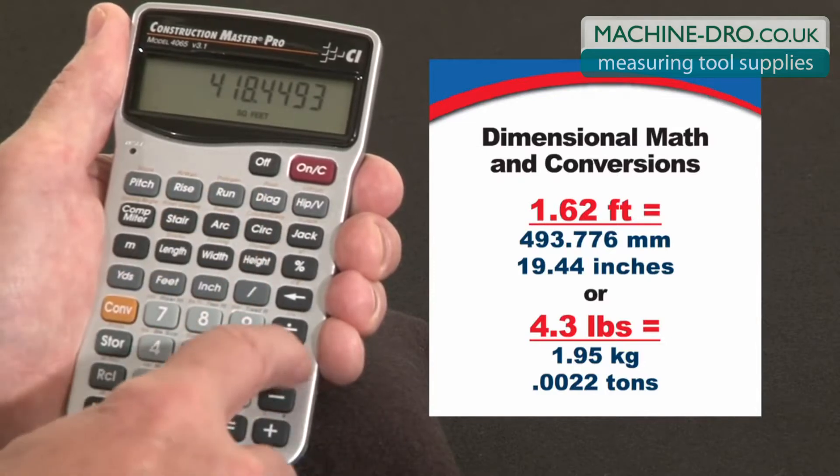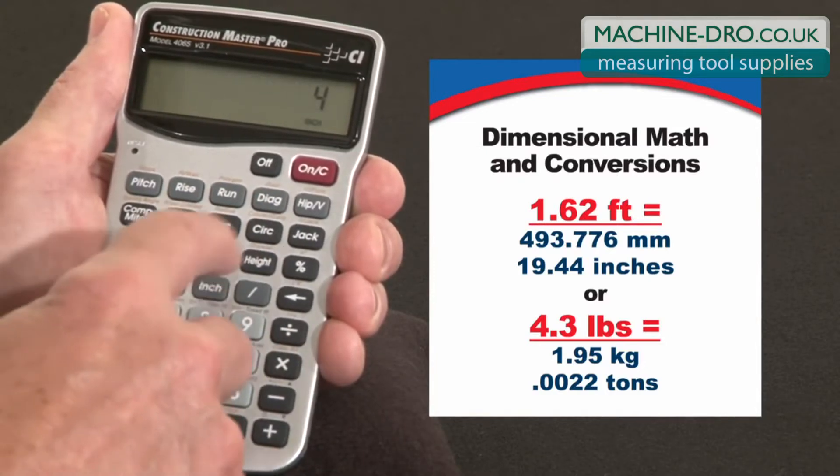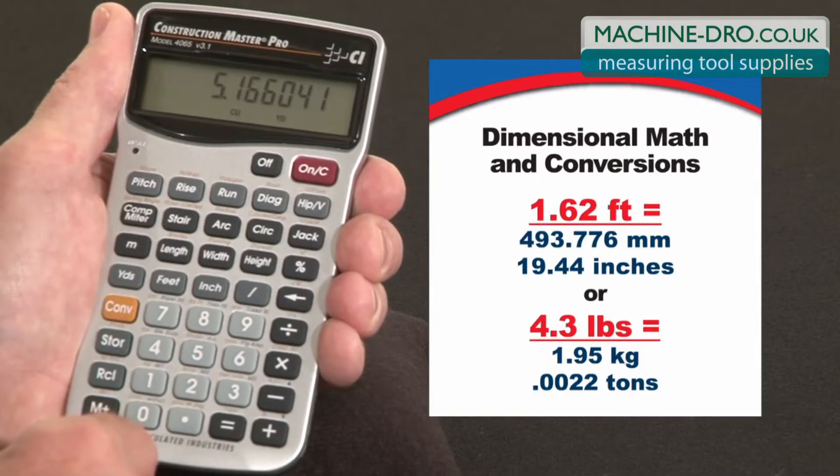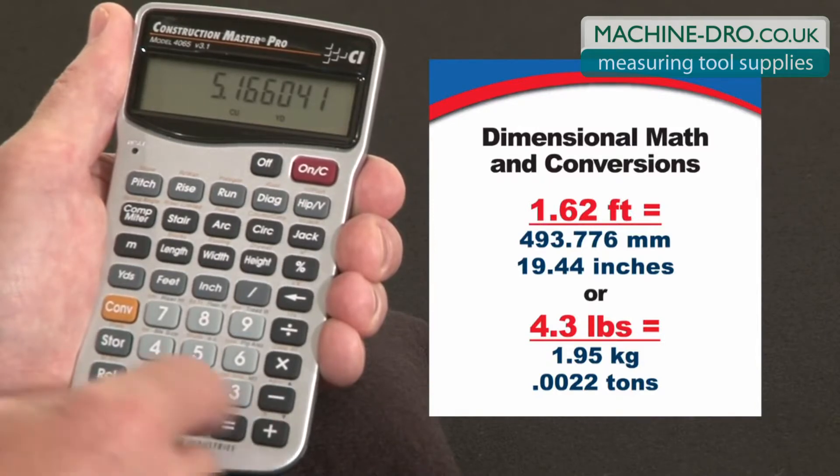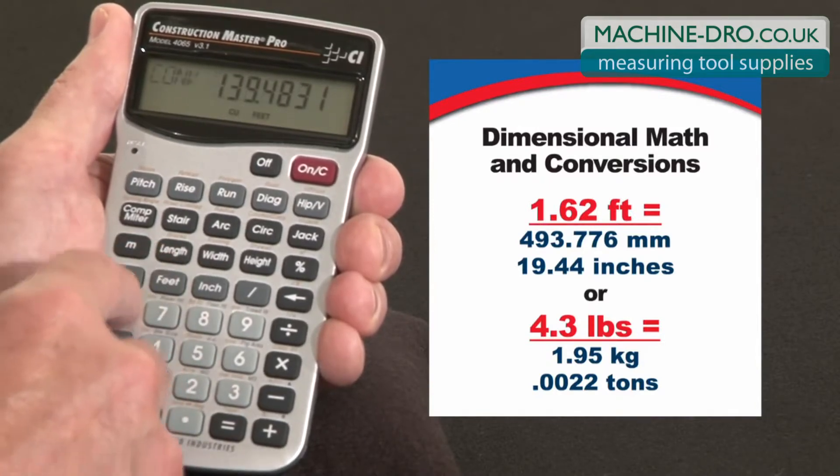Now let's say we're going to pour that 4 inches deep. By 4 inches equals 5.16 cubic yards. You make the same conversions there to cubic feet or cubic meters.